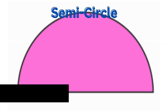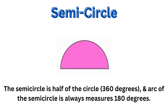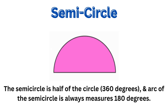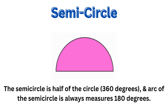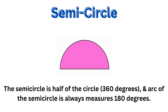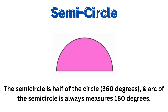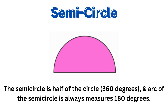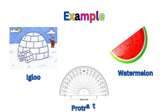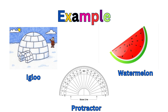This shape is a semicircle. A semicircle is half of a circle, and the arc of a semicircle always measures 180 degrees. Examples are a glue stick, a protractor, and a watermelon.